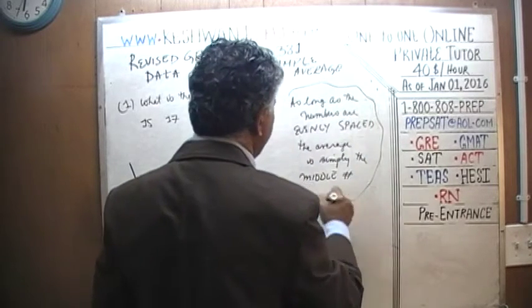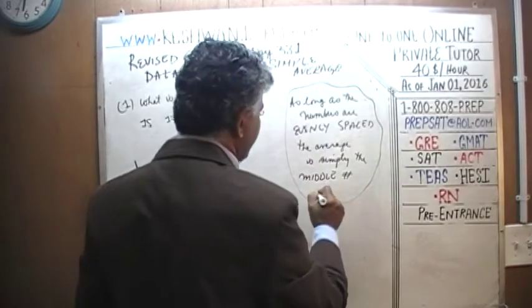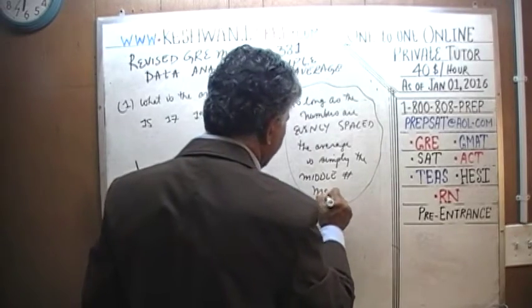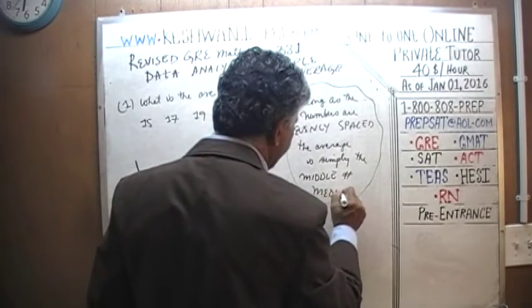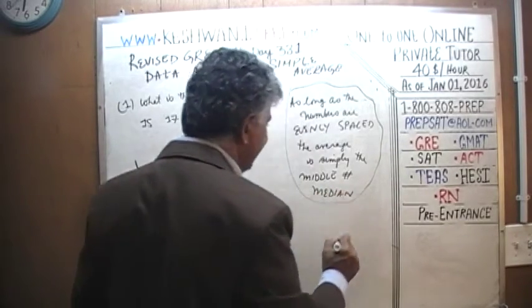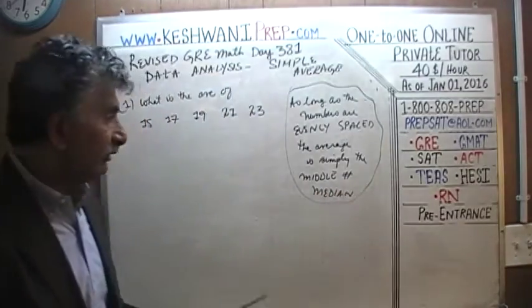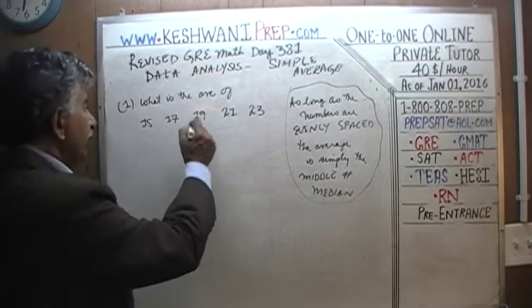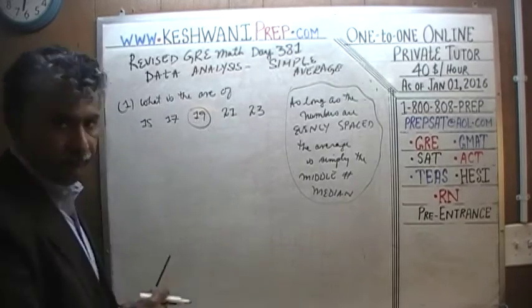The average is simply the middle number, which is what we call the median. Median is the same as the average as long as the numbers are evenly spaced. So the average here would be 19.